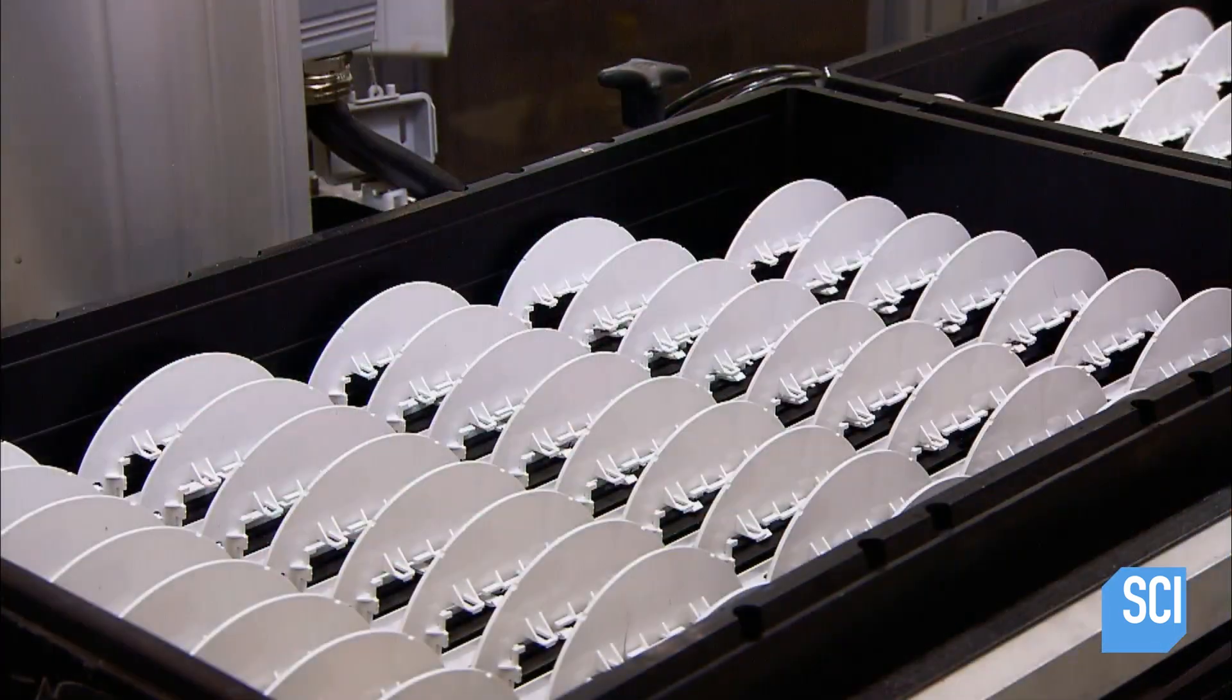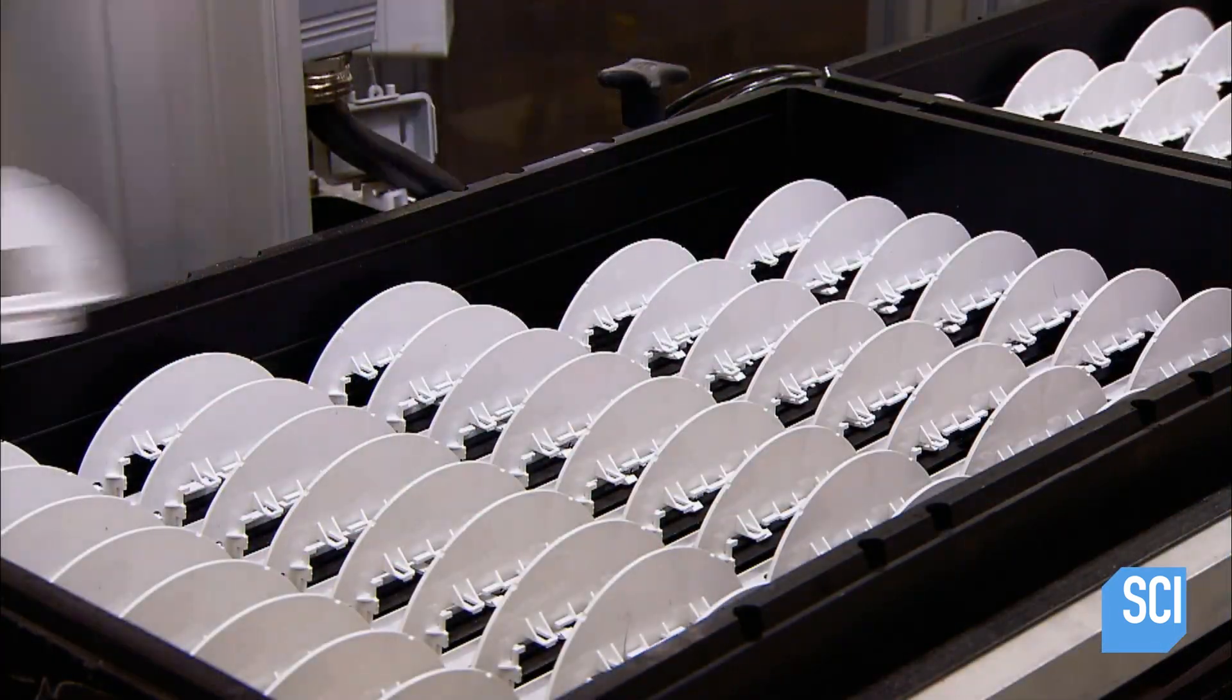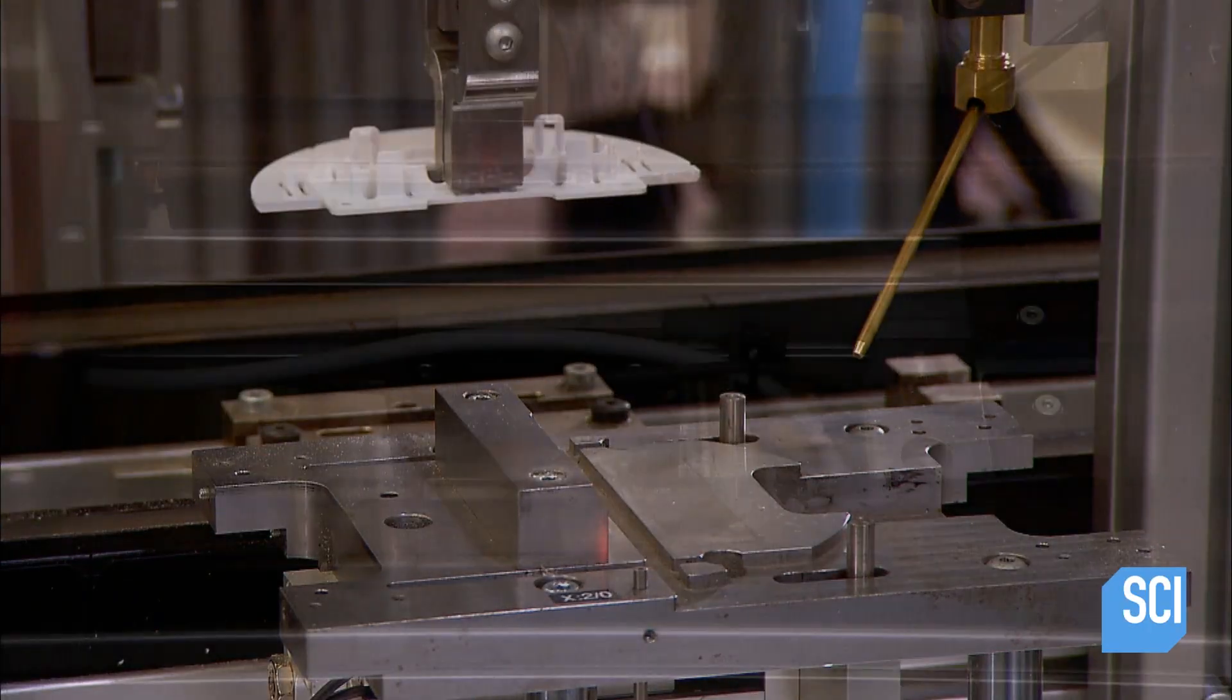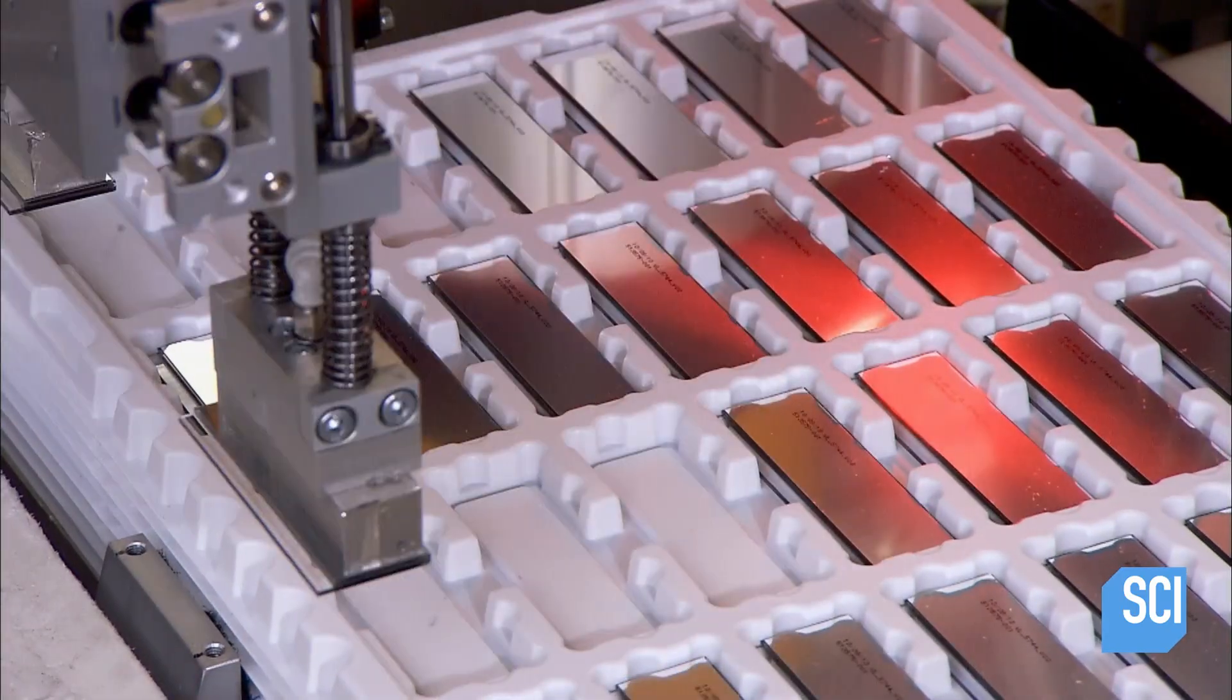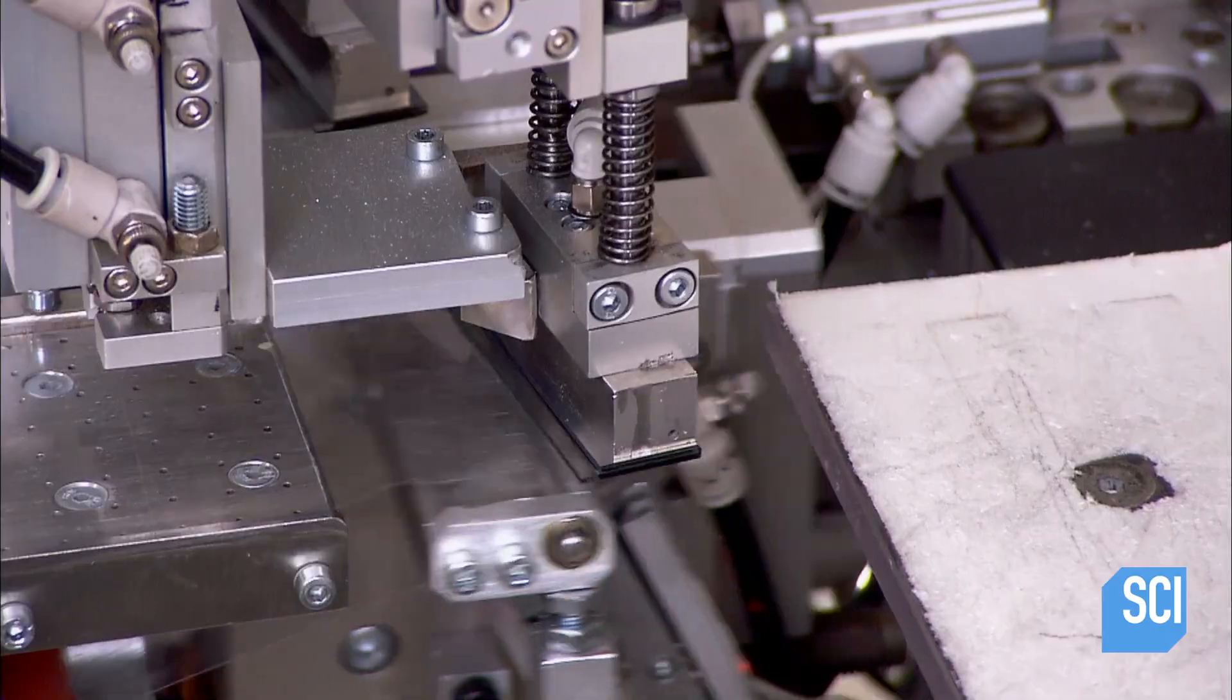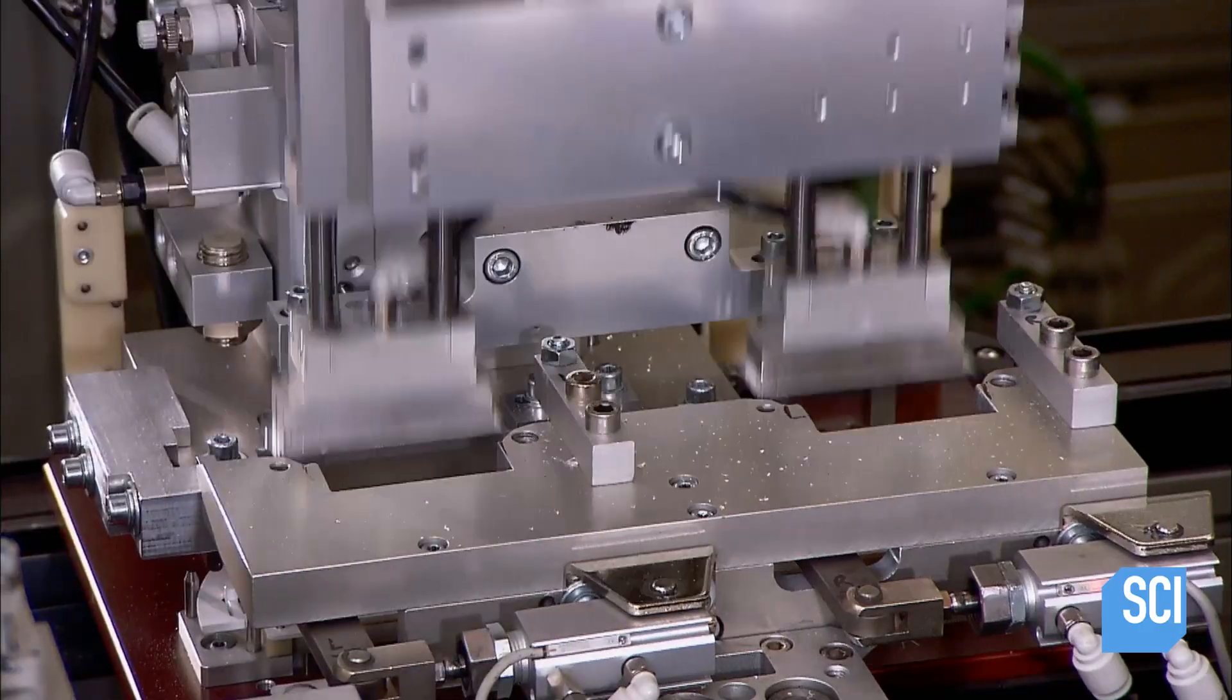Meanwhile, robots assemble the meter's digital display. They take a plastic half-circle housing and install liquid crystal display into its rectangular window. At the next station, a robot uses a vision system to align snaps to attach a circuit board to the liquid crystal display.